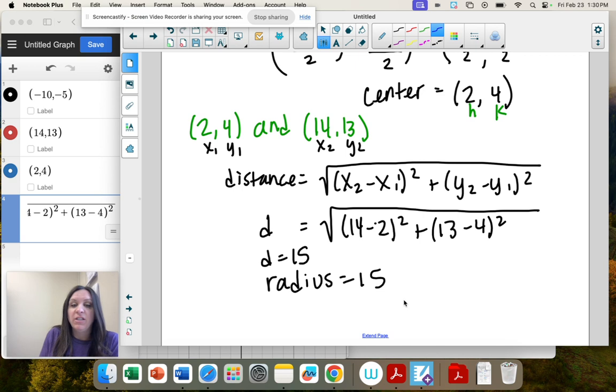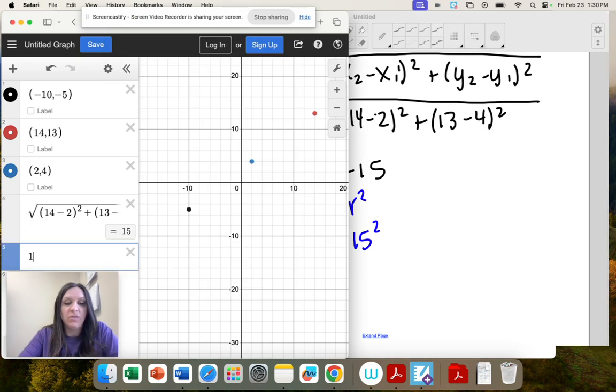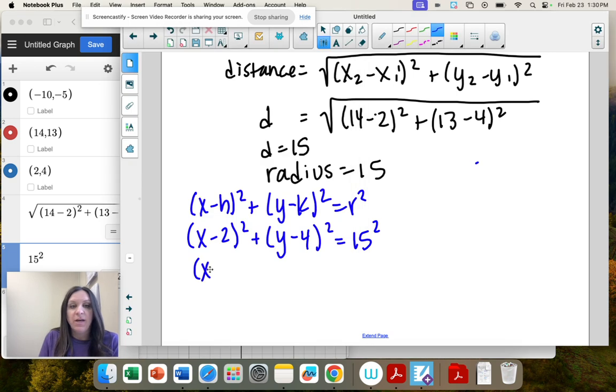So now when we go back to our equation for our circle, we have all the pieces. Now we just need to plug them in. So remember, h, k is the center, so 2, 4. And then r is 15. And 15 squared is 225. So x minus 2 squared plus y minus 4 squared equals 225.